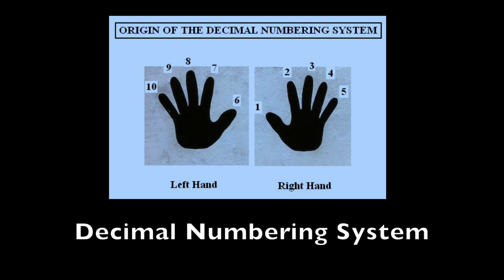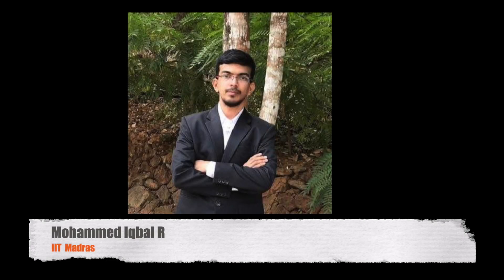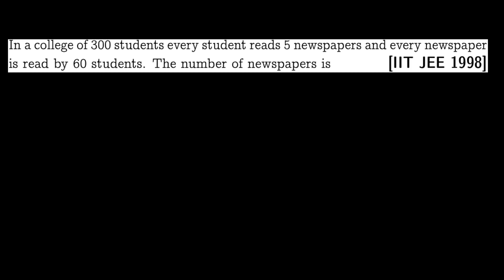In our number system, let's answer some questions. Question number 1: In a college of 300 students, every student reads 5 newspapers, and every newspaper is read by 60 students. The number of newspapers is what? The actual question is: in a college, there are 300 students, each reading 5 newspapers.